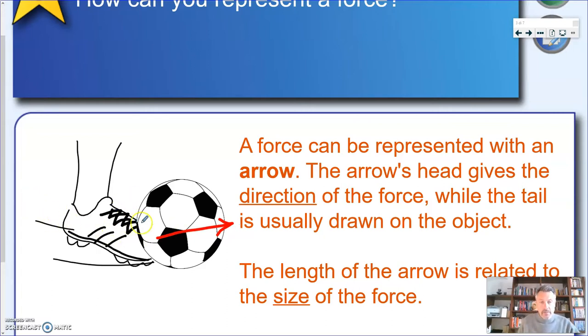So in this case, this shoe is applying a force in this direction. Very likely, this is also going to be the direction in which the ball will start to move. The second important feature is the tail of the arrow, because the tail should be placed where the force is applied. In this case, the contact point between the shoe and the ball. So not in any random place, but exactly where you're applying the force.